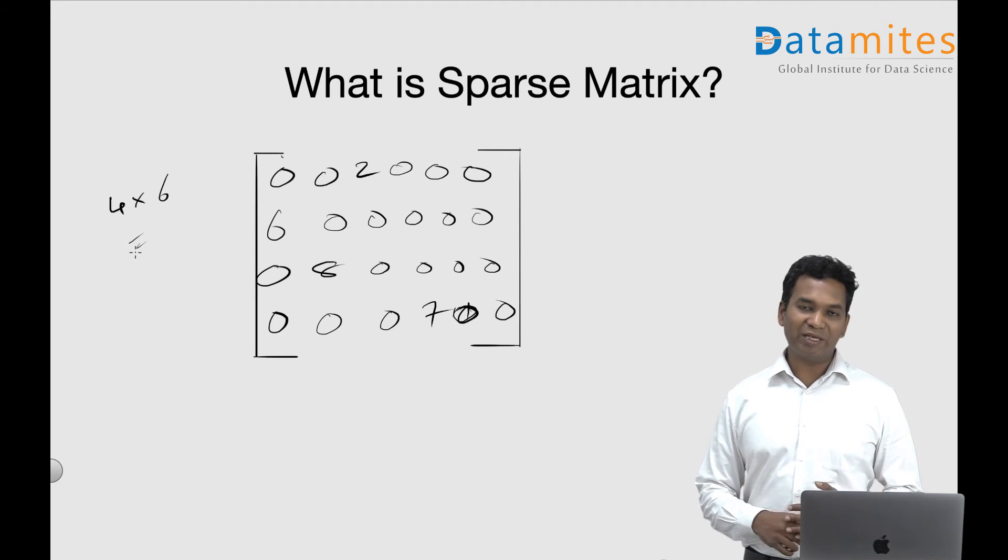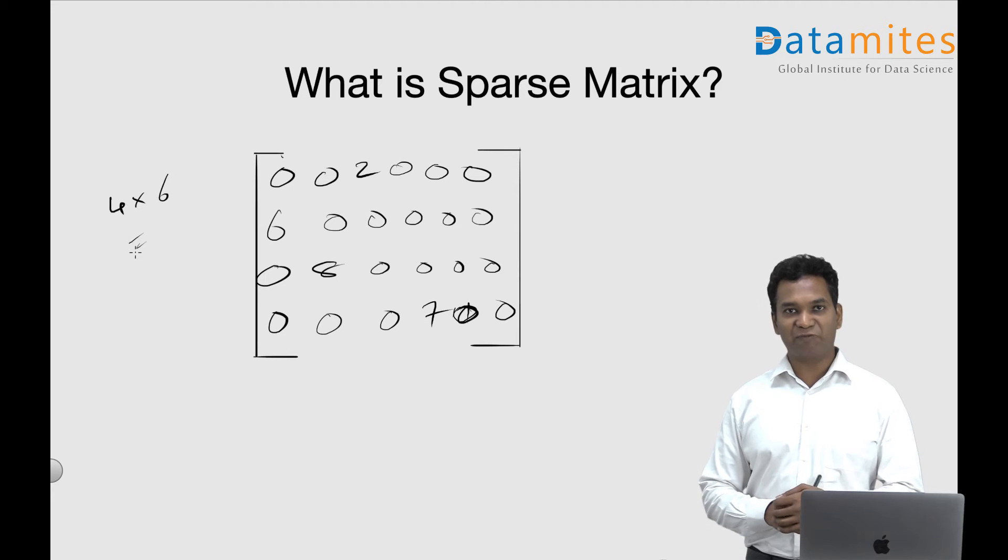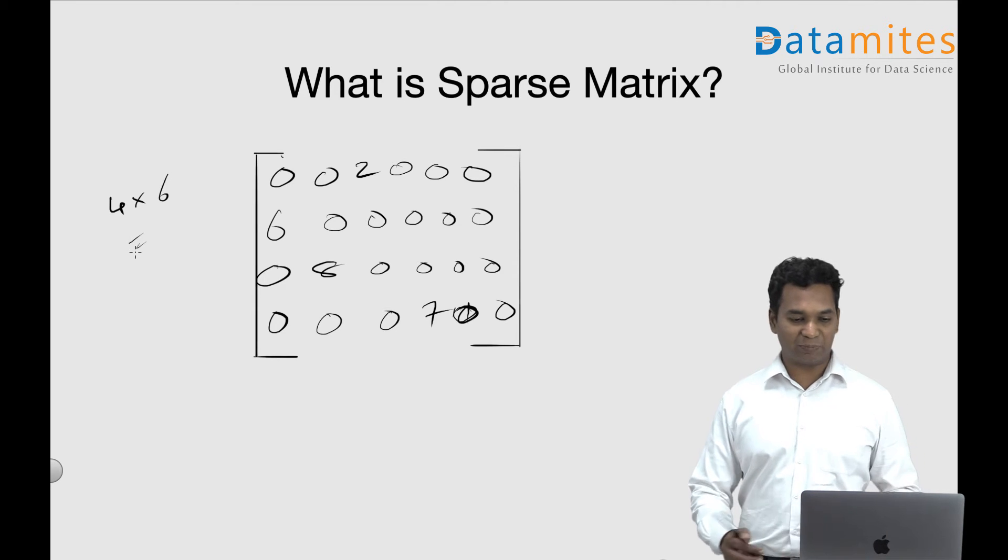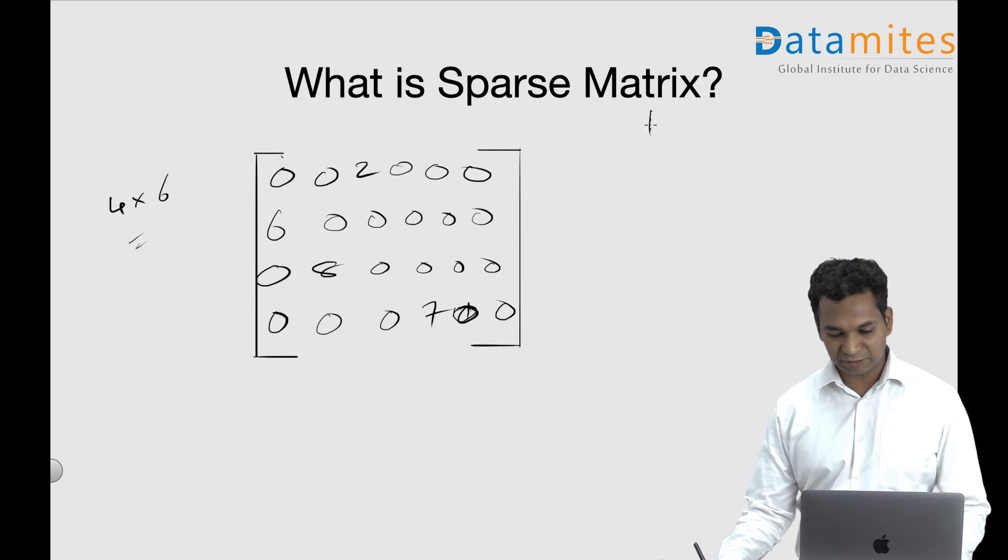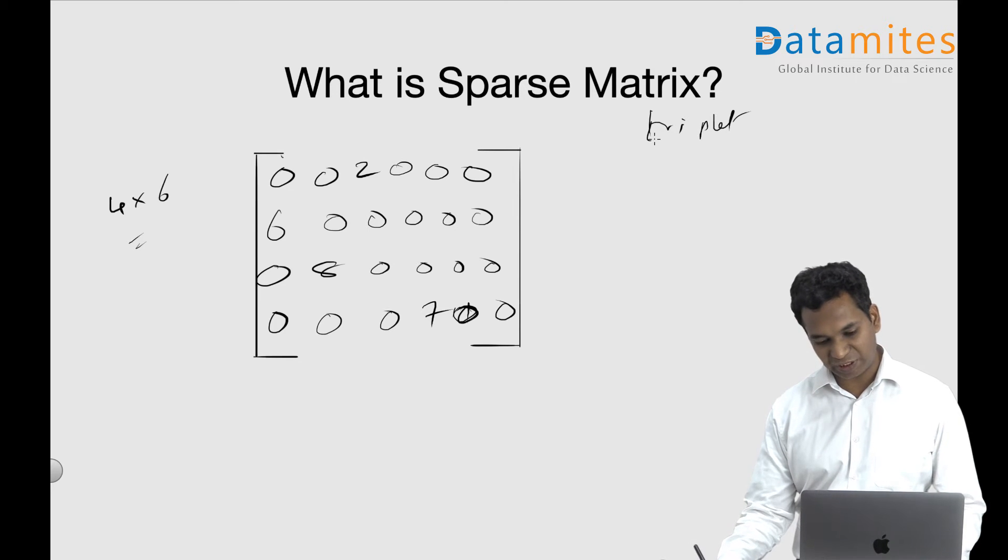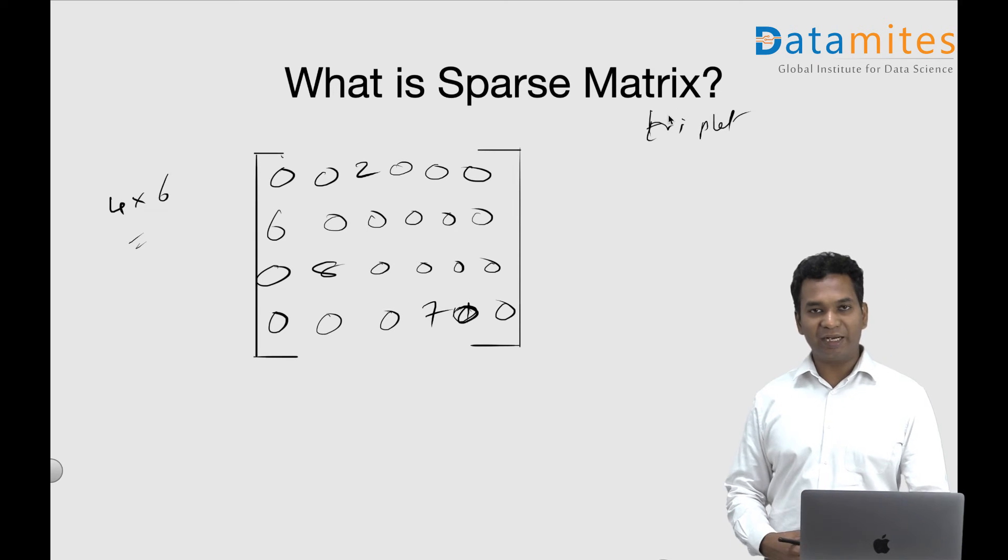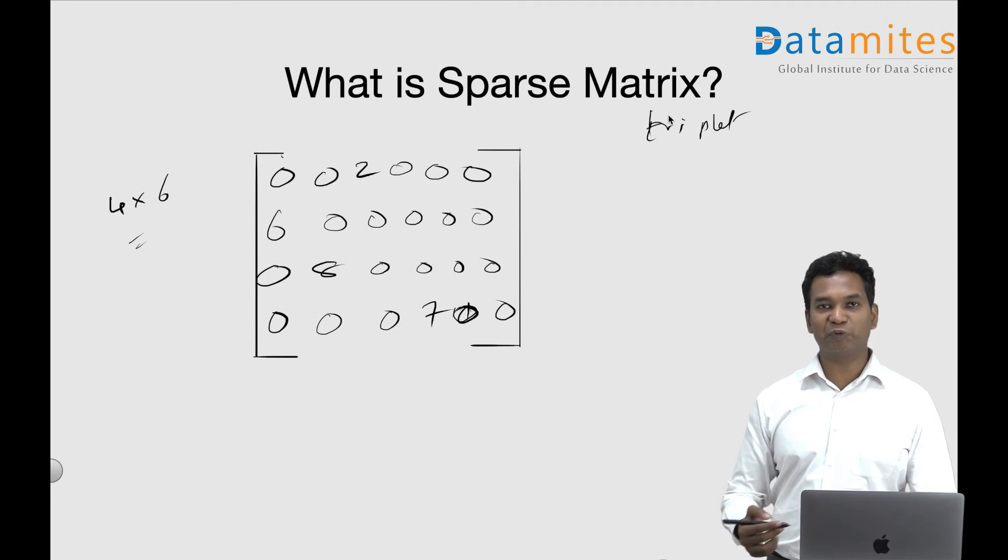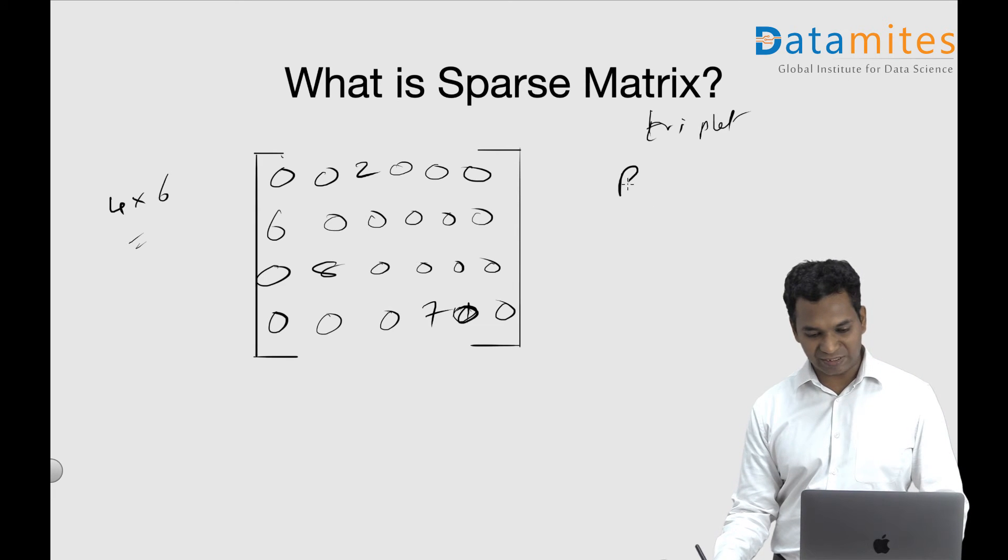One is a triplet representation, the other one is a linked representation. In triplet representation, we kind of convert this sparse matrix into a smaller matrix by using this kind of representation. We say row, column, and then the values - three columns.